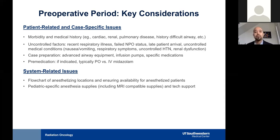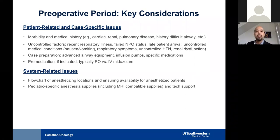System-related issues include creating a flowchart of anesthetizing locations. We must often transport the patient not only on the same floor, but across the hospital and across various floors, and any obstructions can create potential safety issues or delay a particular phase of the gamma knife procedure. Pediatric-specific anesthesia supplies should be checked and available at each site, as well as tech support. Typically, a pediatric PALS-certified nurse serves as our assistant, and potentially a pediatric anesthesia fellow for educational purposes.